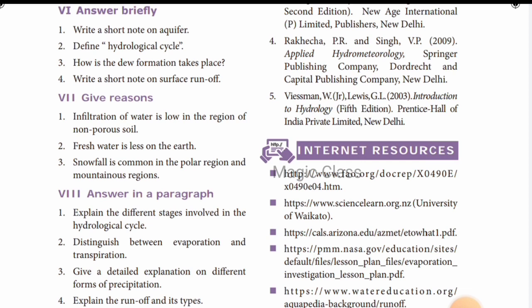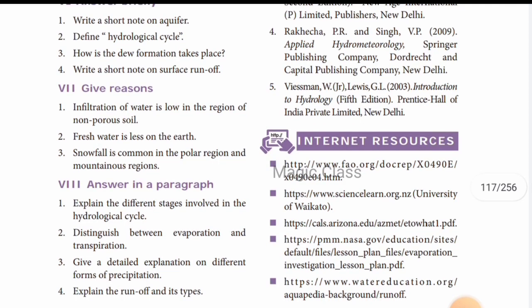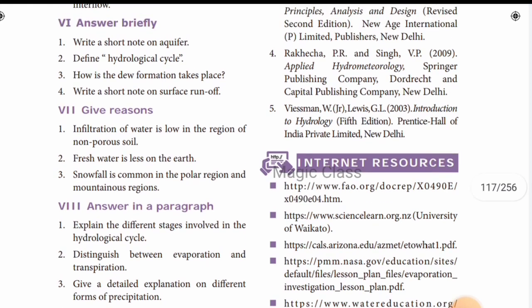Next question: define the hydrological cycle. The answer is on page number 105. The hydrological cycle is the circulation of water — it is a continuous process in which water circulates through the hydrological cycle.